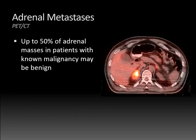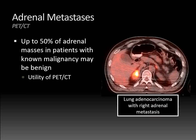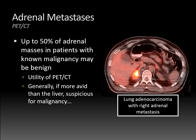Up to 50% of adrenal masses in patients with no known malignancy might actually be benign, because adrenal adenomas are so common we often see them incidentally — and that's where PET CT becomes invaluable. In this example of lung adenocarcinoma with a metastatic focus to the right adrenal gland, malignancy is metabolically active and takes up the radiotracer, appearing avid. A general rule is if an adrenal gland is more avid than the adjacent liver, that increases suspicion for malignancy.